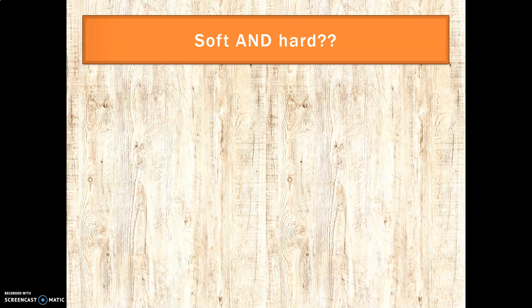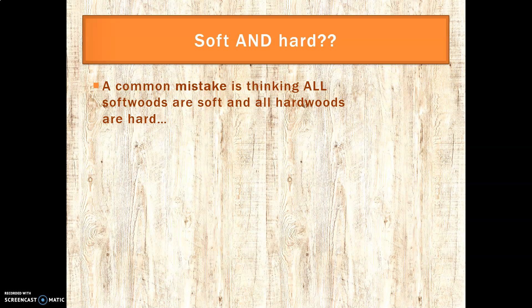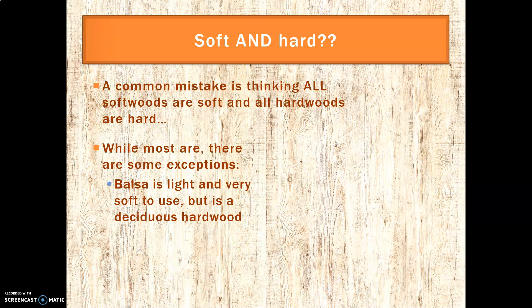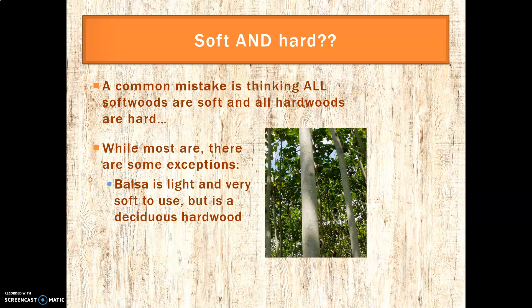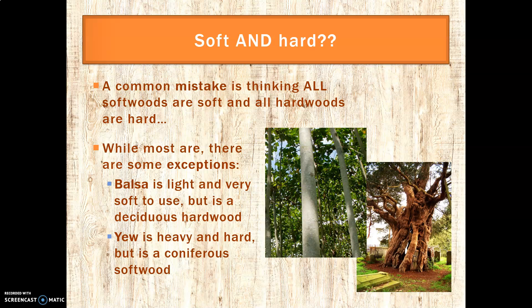Now we've got a couple of special cases to consider. A common mistake is thinking that all softwoods are soft and all hardwoods are hard. Most are, but there are a couple of exceptions. Balsa is very light and very soft, but it is actually a deciduous hardwood, often grown in warm climates like South America. Yew, by comparison, is incredibly heavy, very dense and very hard, but it's actually a coniferous softwood. You'll probably have seen one in a graveyard — the needles drop and acidify the soil, which helps break down decomposing bodies, which is why graveyards were built around them.